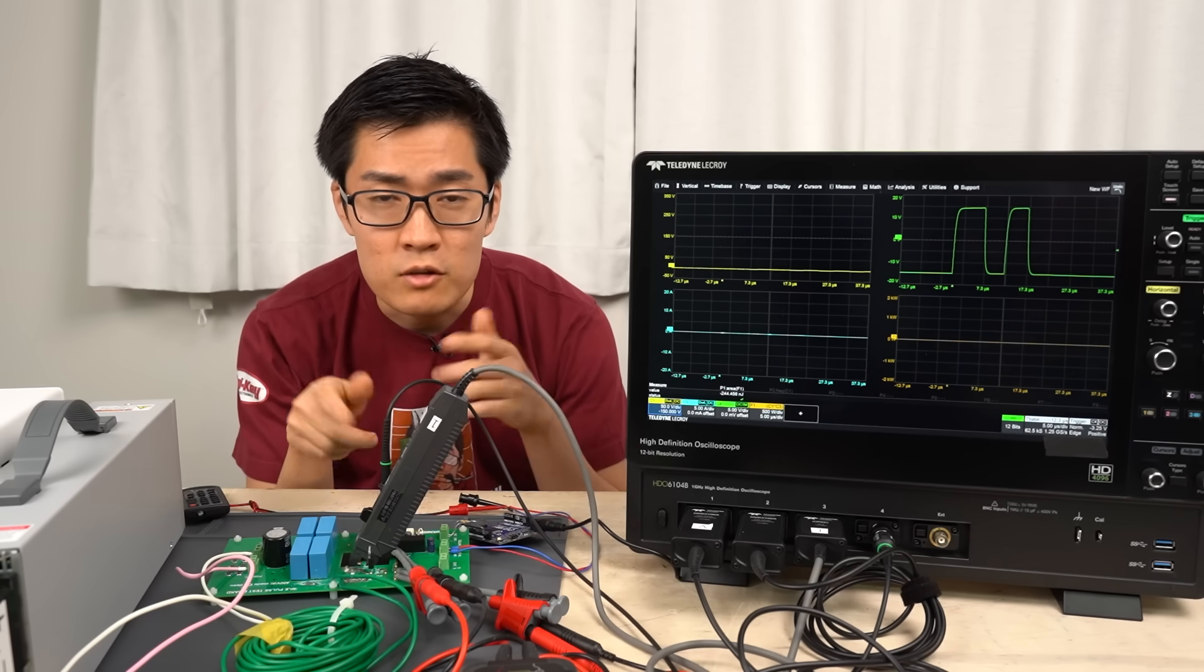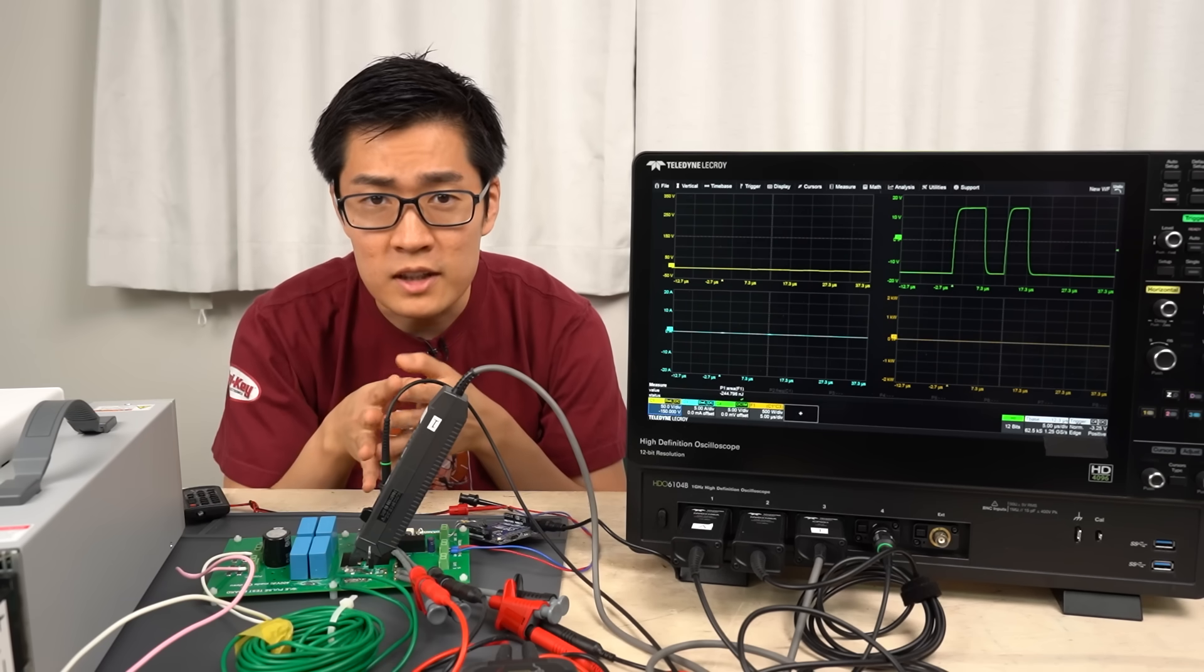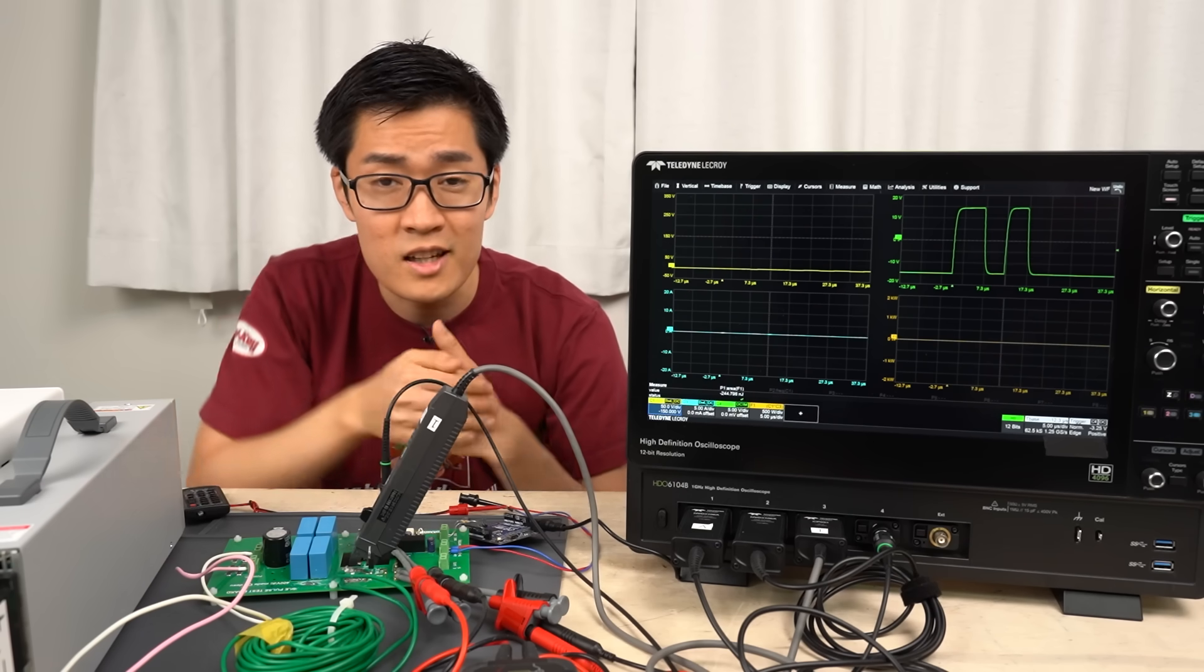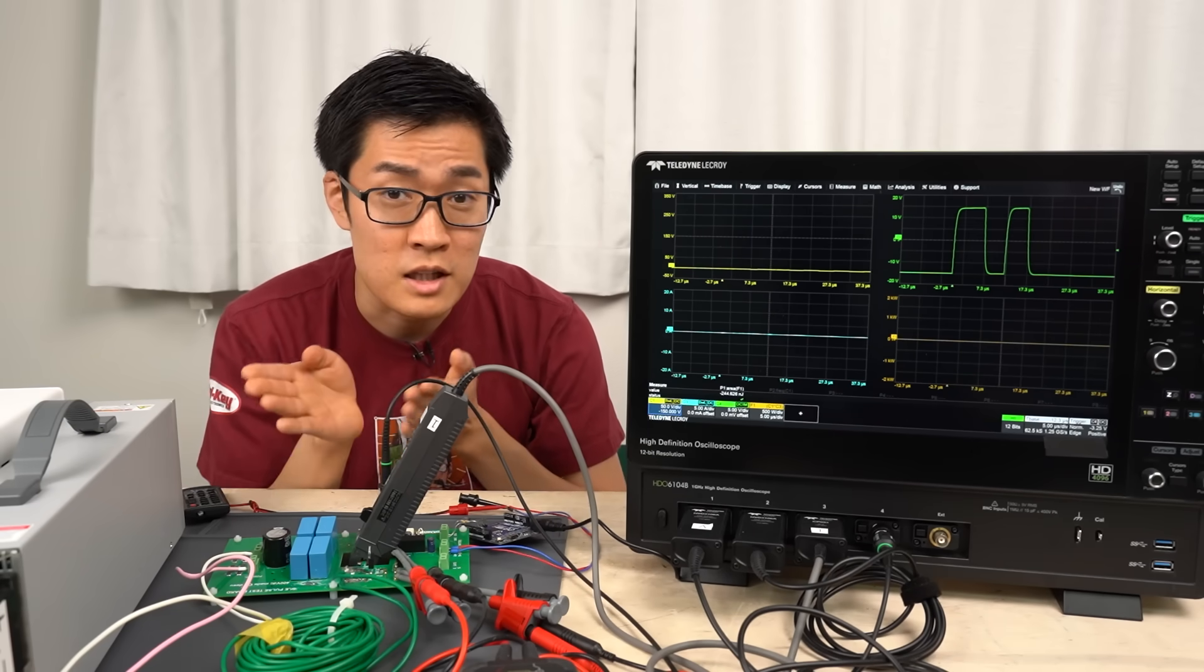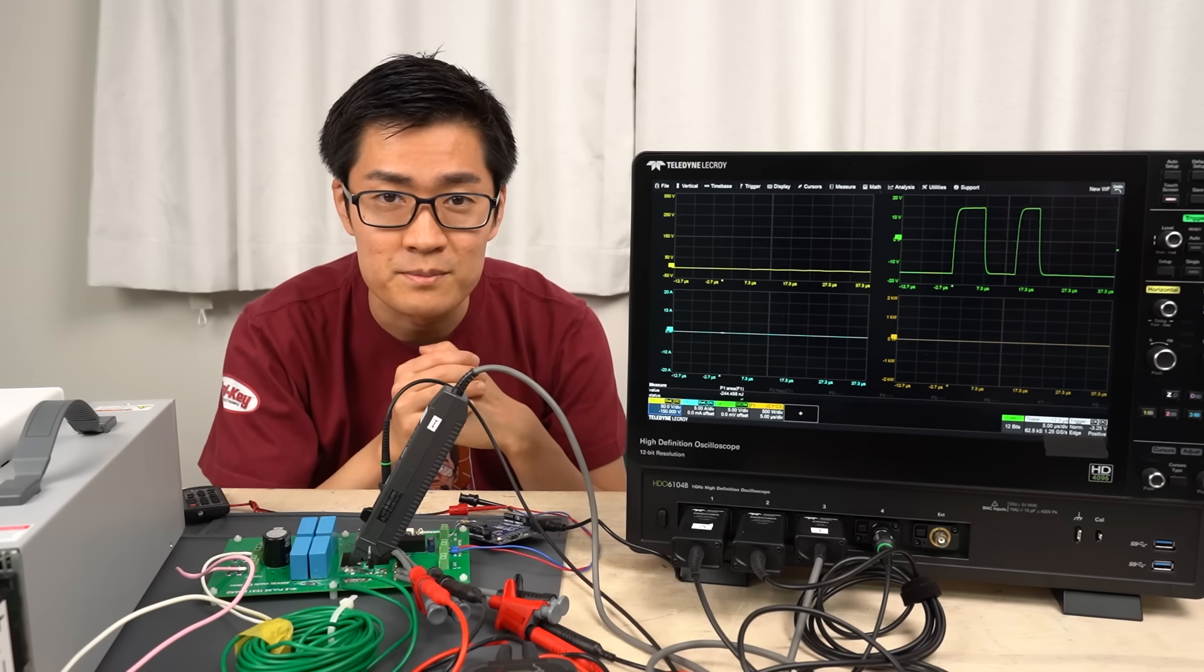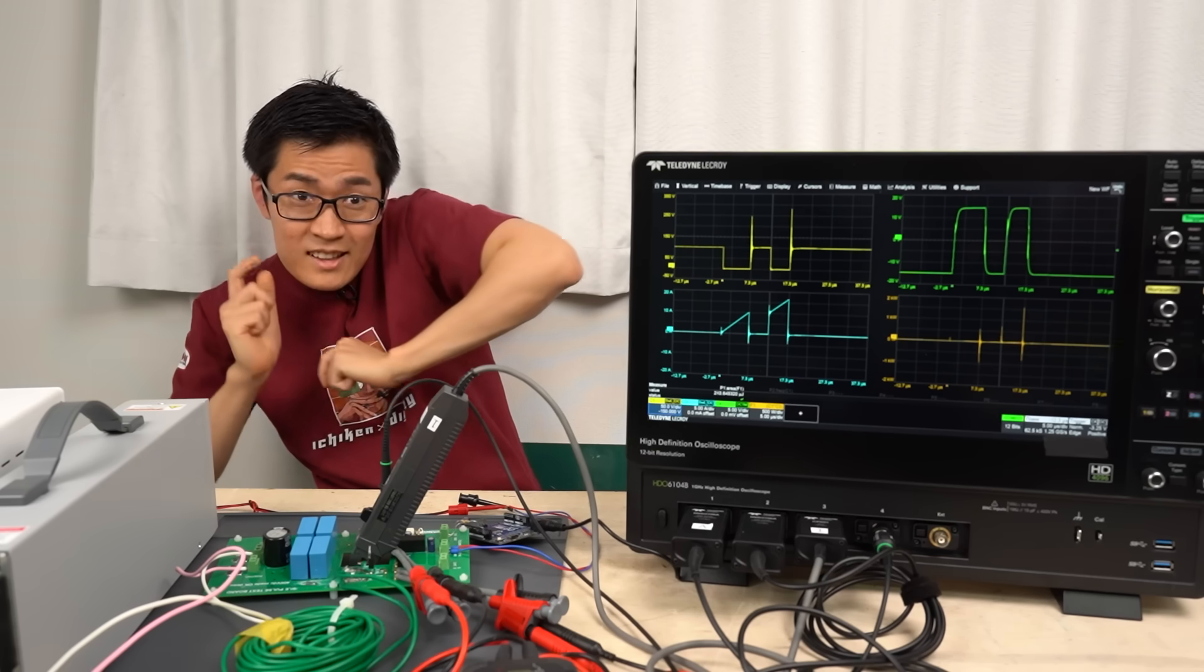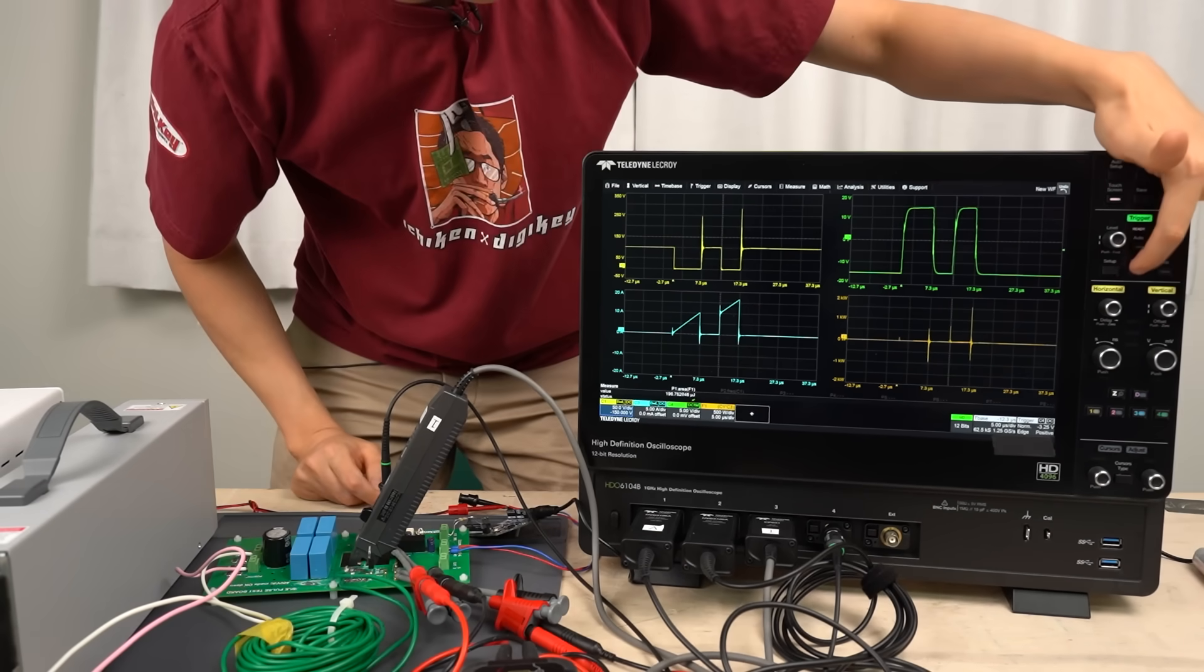By the way, the MOSFET we are using has a withstand voltage of 650 volts. Actually, I would prefer to operate at around 400 volts, but there are some design flaws that cause the voltage to overshoot and exceed the rated voltage of the MOSFET. It leads to what we all know as dangerous Denki Otaku situation. Therefore, this time we will operate at around 100 volts for safety. Now, let's turn on the power. It's operating. For safety, I'll freeze the waveform and stop the power.